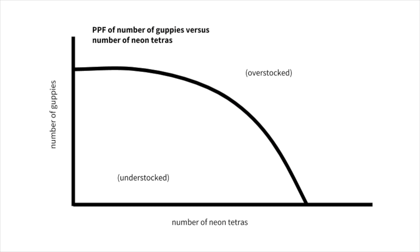A production possibility frontier, or curve, is a graph generally used to show the different alternative combinations of something you can produce. The x-axis has one thing, and the y-axis has another. The curve of the graph shows you that as x increases, y decreases, or as y increases, x decreases. We can repurpose this type of graph to talk about two species of compatible fish: neon tetras and guppies. The graph will show how many of each fish we can include in our tank. We're going to put the number of neon tetras on the x-axis and the number of guppies on the y-axis.